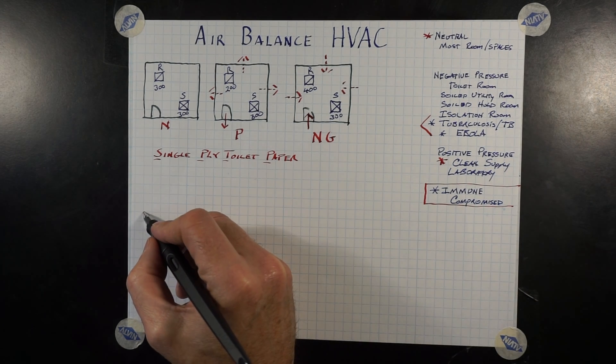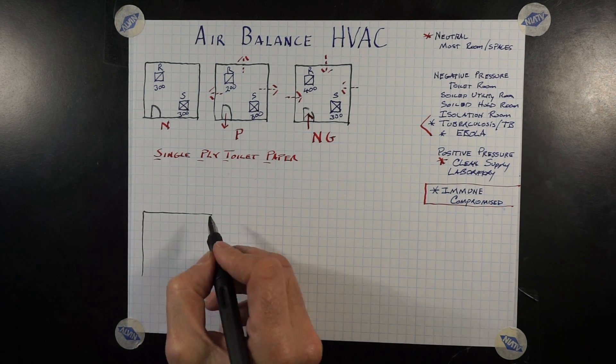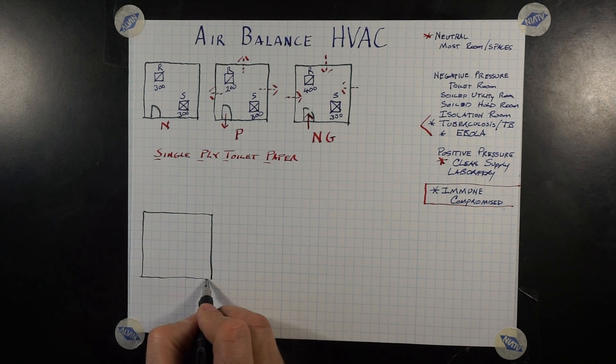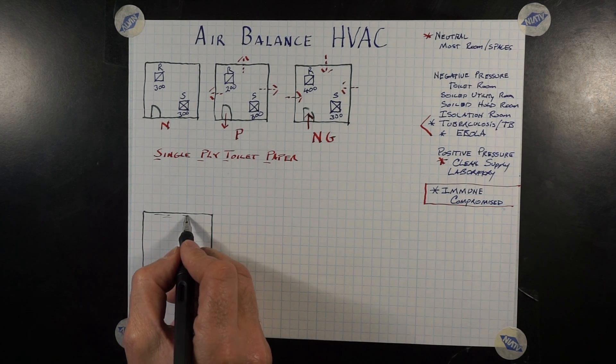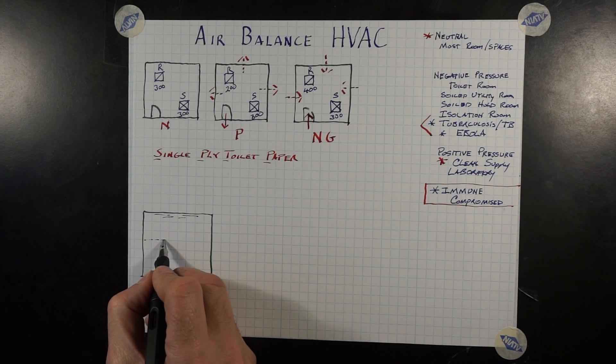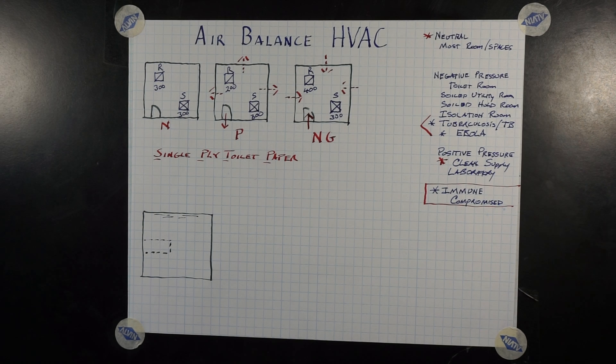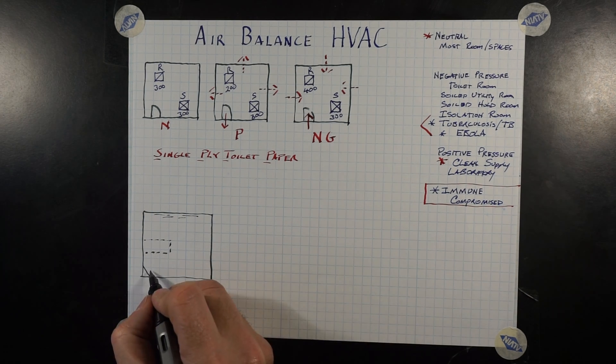If the toilet paper does not move, that is neutral. If the toilet paper is being blown out of the room, and everything is tested in relationship to the corridor, that means that room is positive. If it's being sucked into that room, that means that room is negative. So any toilet room, gang toilet, or office toilet space should always be negative in relationship to the space surrounding it.